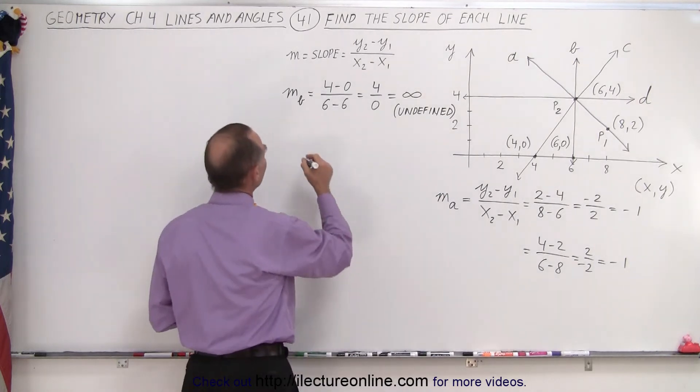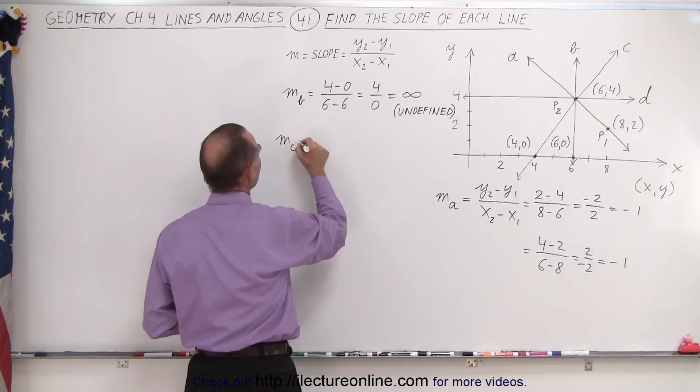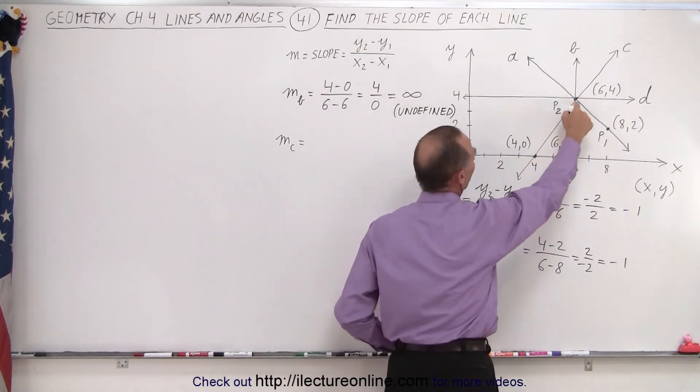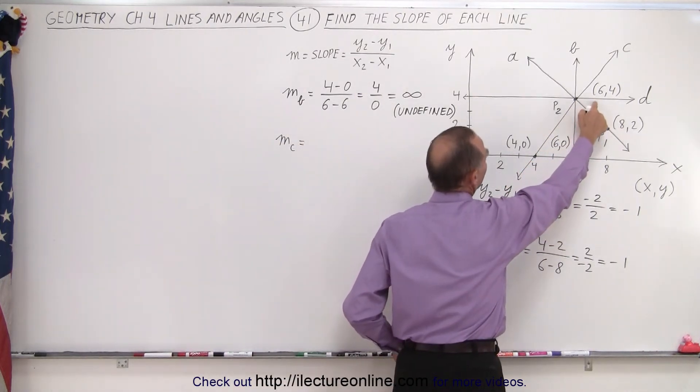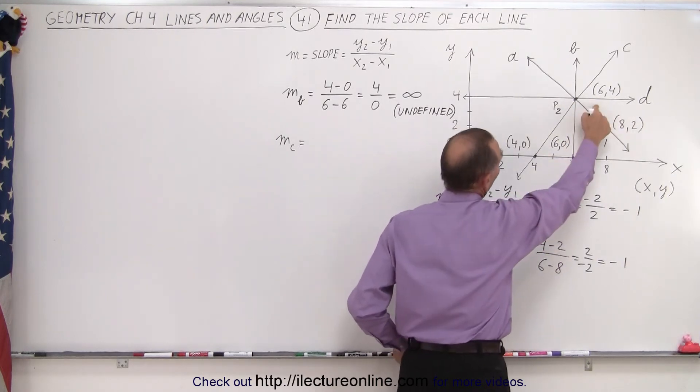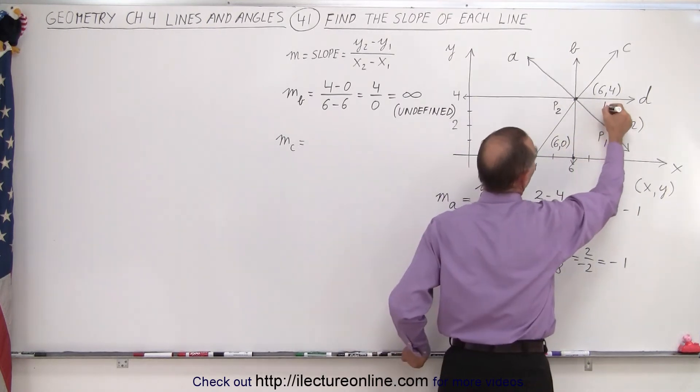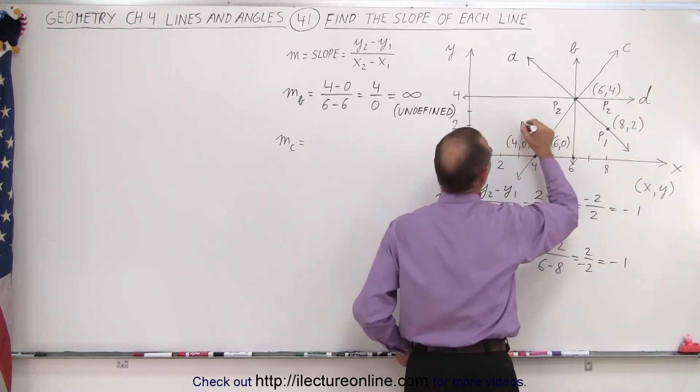All right, how about c, line c, m sub c? And notice we can pick these two points right there. So I'll pick this as point one and this as point two, or I can pick this as point two and this as point one. It doesn't really matter. So let's call this point two and let's call this point one.